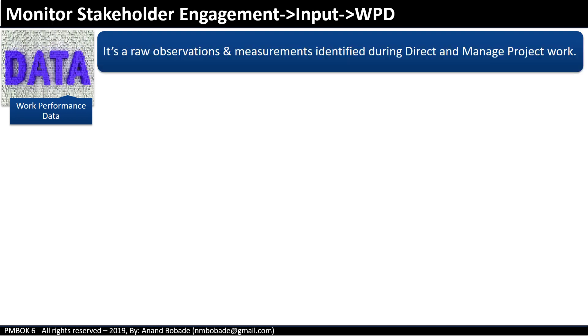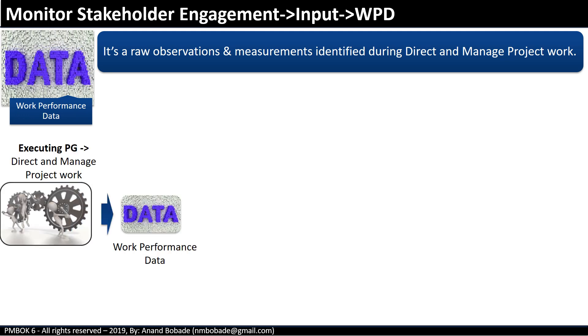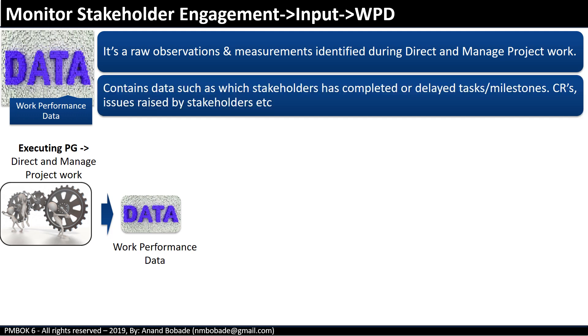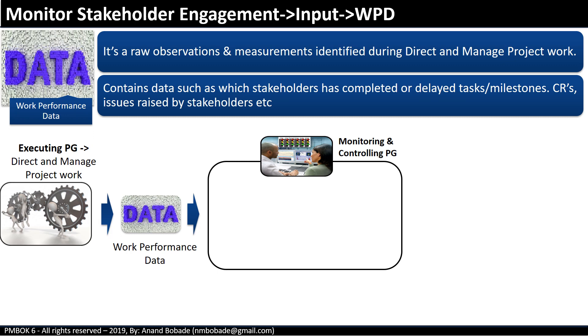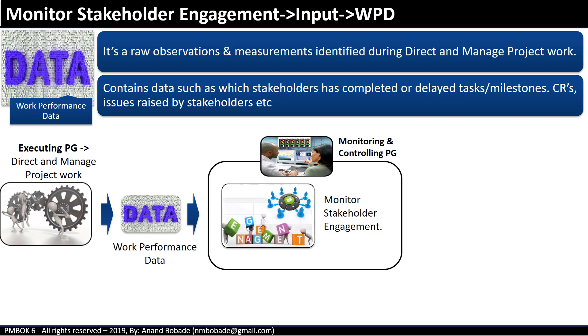Work performance data consists of raw observations and measurements identified during direct and managed project work. It contains data such as which stakeholders have completed or delayed tasks, milestones, change requests, and issues raised by various stakeholders. With this work performance data, the project manager monitors and analyzes the current level of stakeholder engagement.